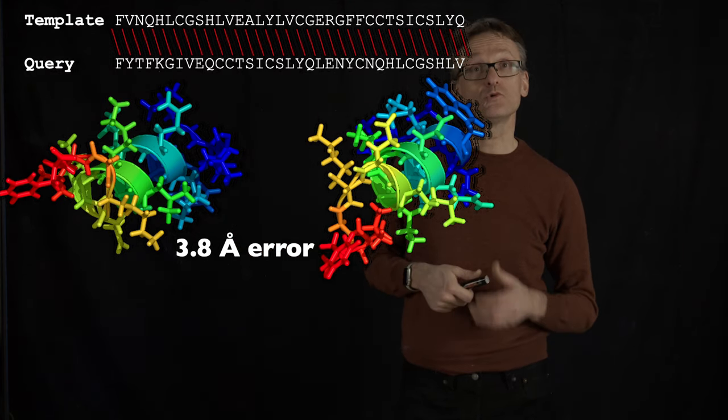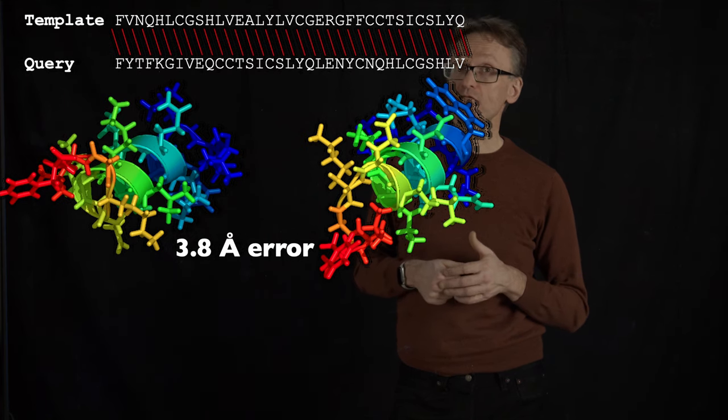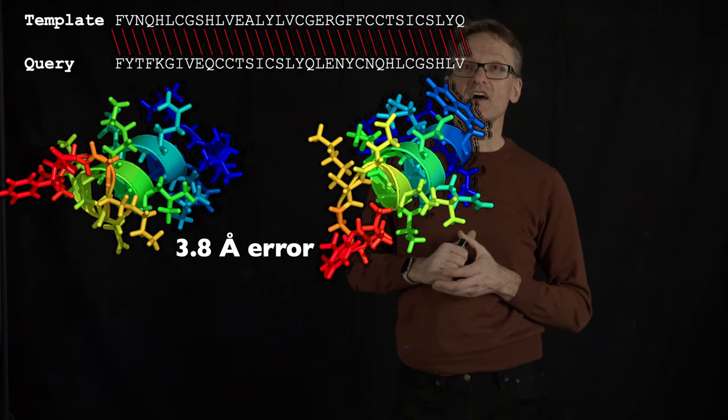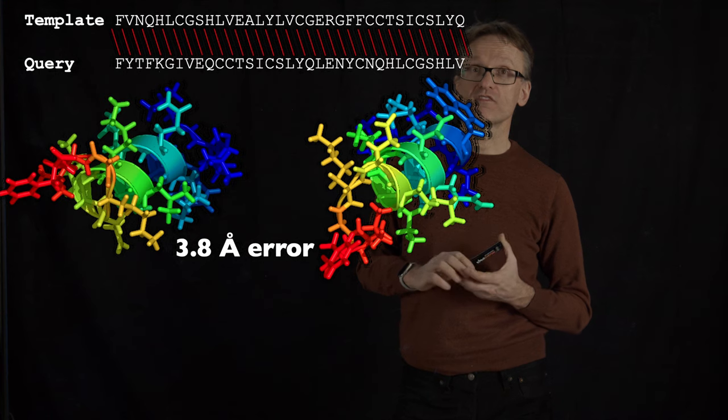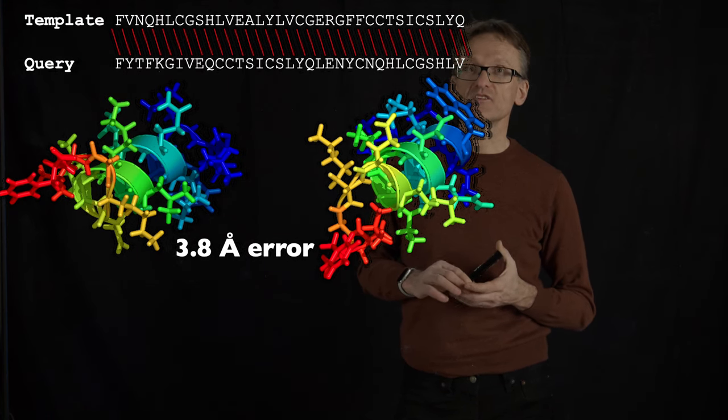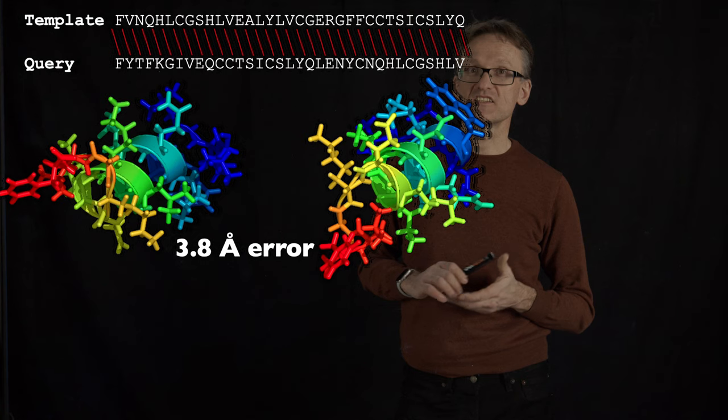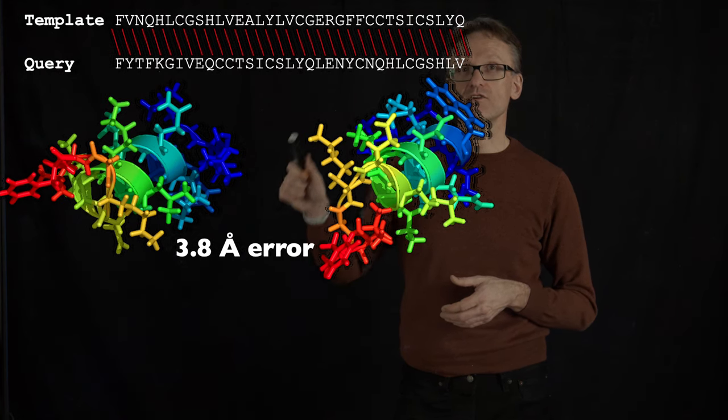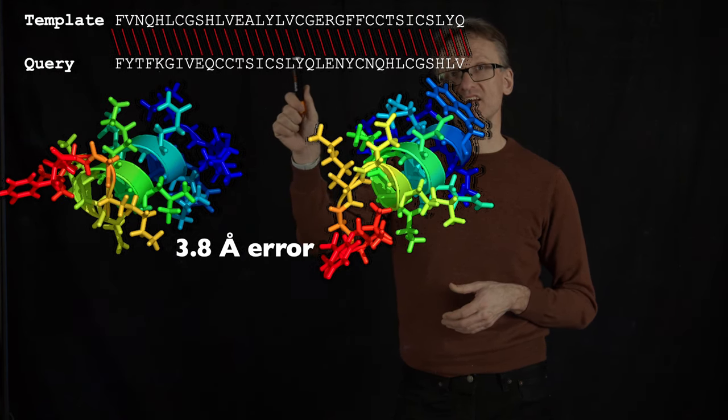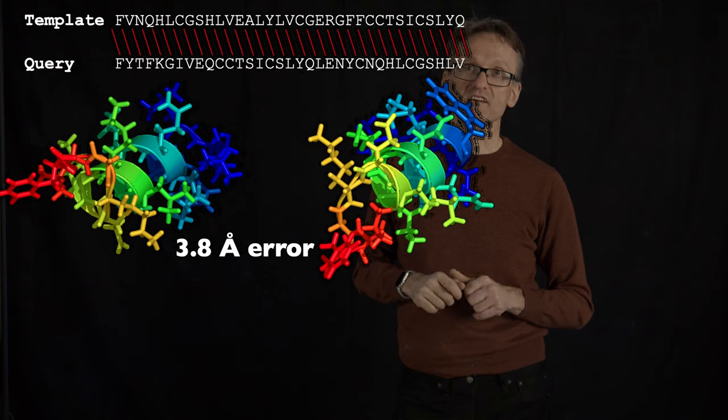Remember what I told you before? Two angstrom structures are good. We can frequently get that with homology modeling. Around five all bets are off. So two angstrom error might not sound like insanely good but it's less than half of having one helix having made a single offset in the sequence alignment.